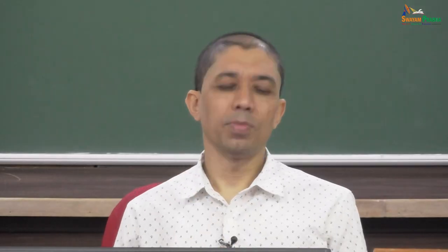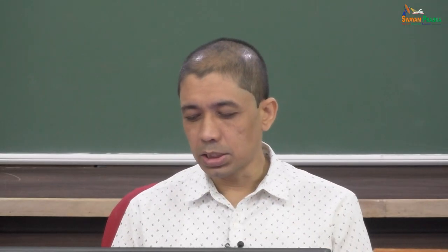In real-life oligopoly markets, both simultaneous and sequential games are involved. However, in our course we will not discuss sequential games or any oligopoly model that depends on sequential decision-making. We will discuss only simultaneous games.